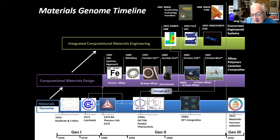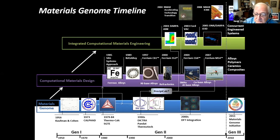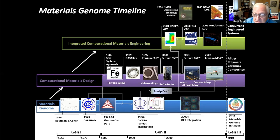The successes in the 1990s made the case for founding the DARPA AIM program on Accelerated Insertion of Materials in 2001. That was really the start of what we now call ICME — Integrated Computational Materials Engineering — where the concept was to go beyond the initial design of a new material and address the full materials development cycle in terms of process optimization, scale-up, and the generation of data for specifying minimum properties for materials users.